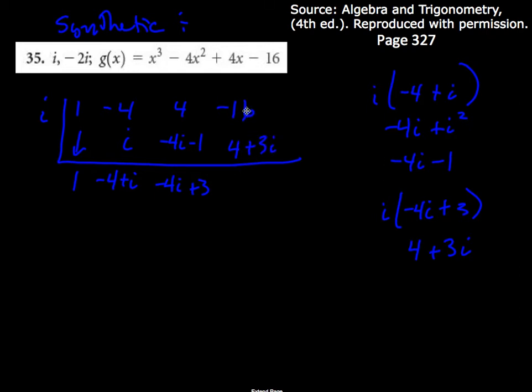Then, I'll add. So, this would be negative 12 plus 3i. Notice at the end here, I did not get a remainder of 0. Therefore, I would say i is not a 0 of that polynomial that they had up above, g of x.